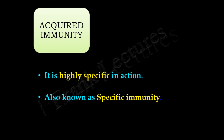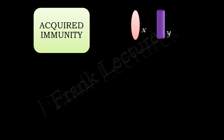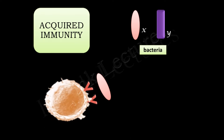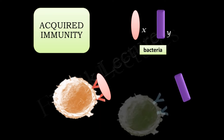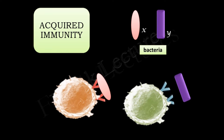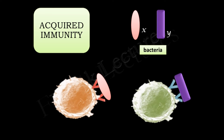To understand the specific nature of acquired immunity: if there is an infection by bacteria X, the adaptive immune system activates a set of cells specific to bacteria X only. If bacteria Y infects, those cells produced against bacteria X will not defend against bacteria Y; instead a separate set of cells specific to bacteria Y will be activated. Thus adaptive immunity is highly specific in nature.